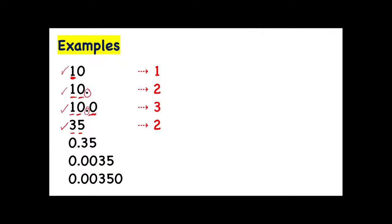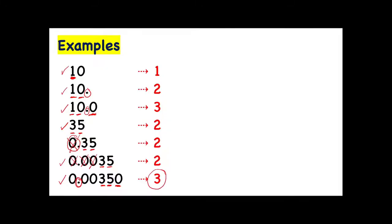The fifth example has only two significant digits because leading zeros are not significant. Similarly, the sixth example has only two significant figures because those are all leading zeros. For the last example, we have three significant figures because we have two non-zero digits and one trailing zero. This trailing zero is significant because the digits have a decimal point, giving us three significant figures.